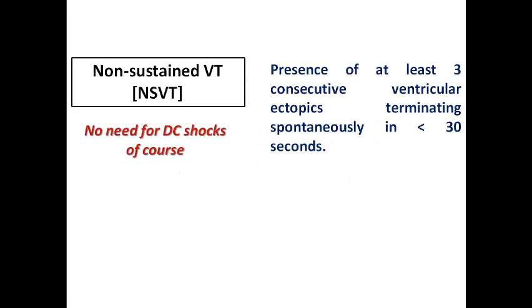Let's classify VT according to duration. Non-sustained VT means at least three consecutive ventricular ectopics terminating spontaneously in less than 30 seconds. There is no need for DC shock since it resolves spontaneously. We focus on the causes of these runs and consider anti-arrhythmic medication to suppress them or watchful waiting — but no role for DC shocks in non-sustained VT.